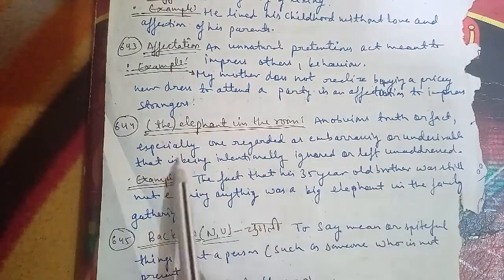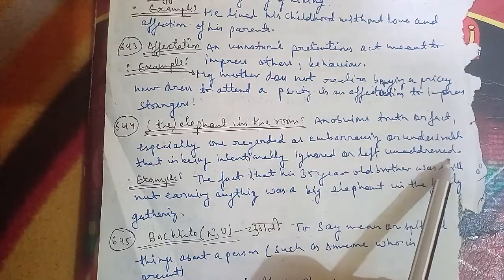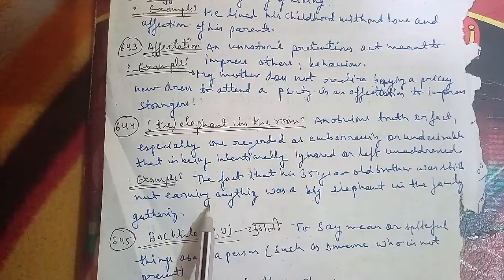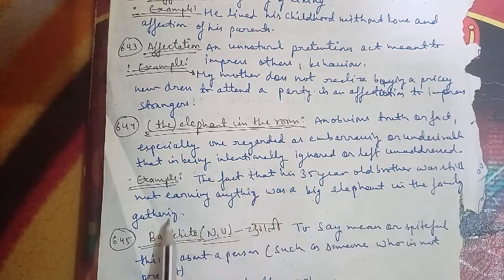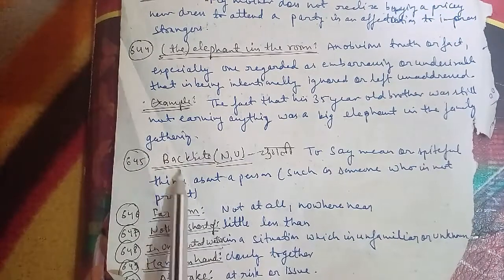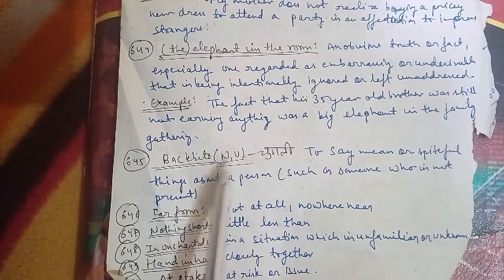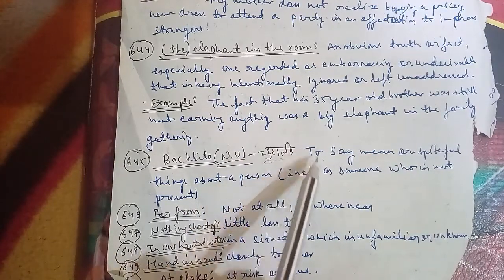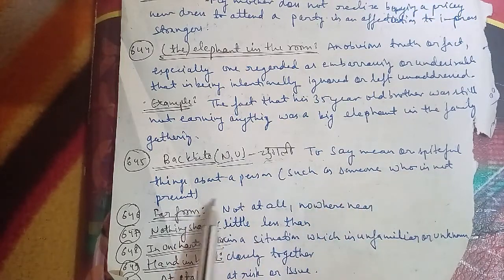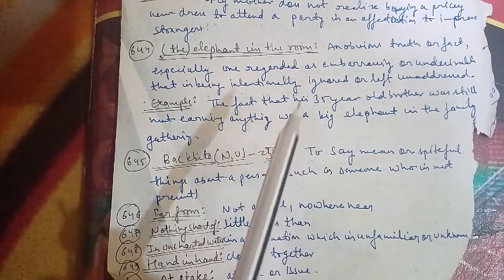The 645th word is 'backbite'. No one likes it — it can be used as a noun or verb. It means 'chugali karna' — to say mean or spiteful things about a person who is not present. For example, if I'm talking to Ria and sharing something about Sumit who is not present, and she relays it to Sumit, that is backbiting.